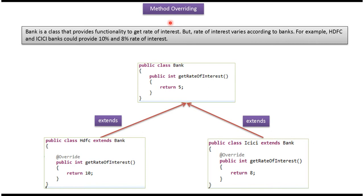In this video tutorial I will cover method overriding. Here you can see a bank class — it provides functionality to get the rate of interest. You can see the getRateOfInterest method and it returns 5. But the rate of interest varies according to the banks.